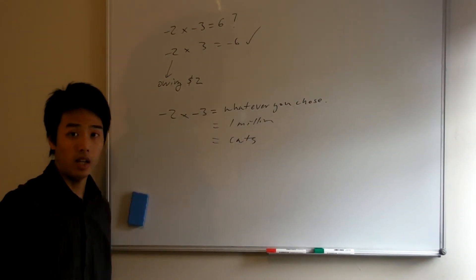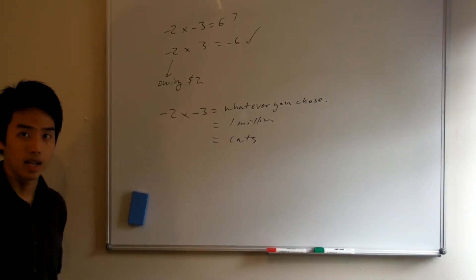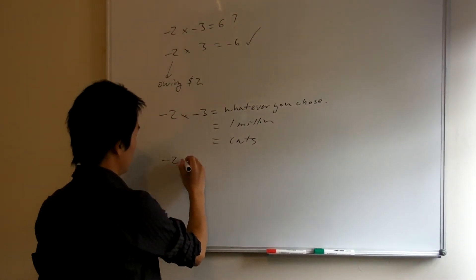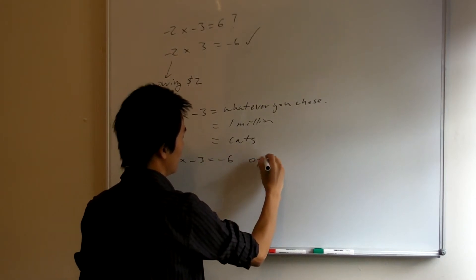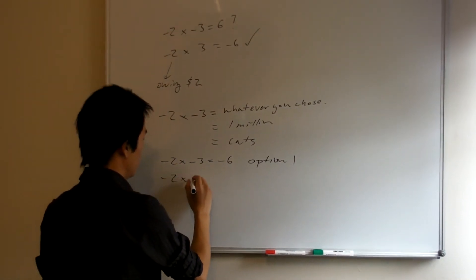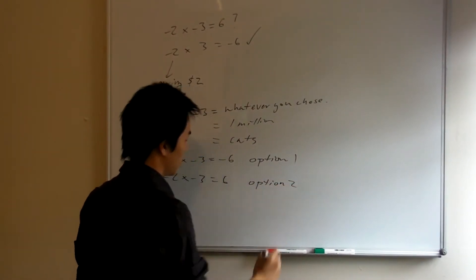But you have to agree, if you want a working number system, one that makes sense and is actually useful, you really only got two options. Either this is minus 6, or option 2, you get positive 6.